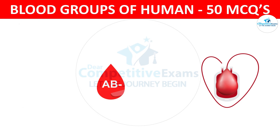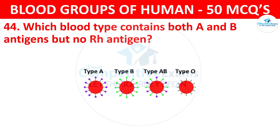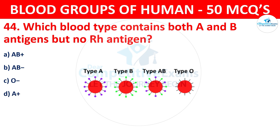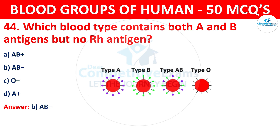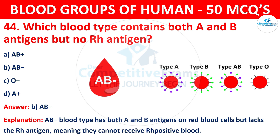Question 44: Which blood type contains both A and B antigens but no RH antigens? The correct answer is B, AB negative. AB negative blood type has both A and B antigens on red blood cells but lacks the RH antigen, meaning they cannot receive RH positive blood.